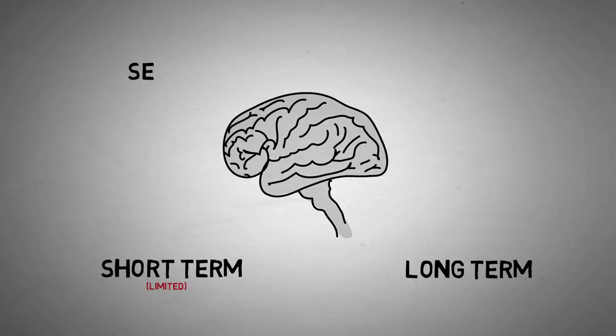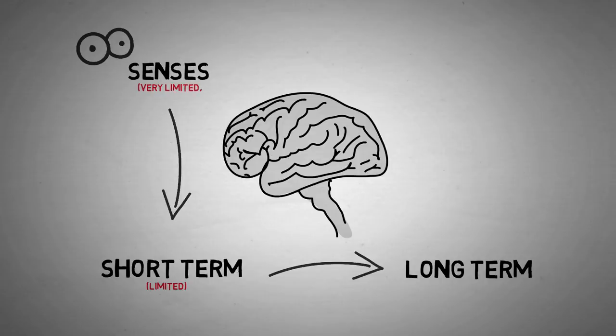So first off, short-term memory is very important, because it holds information between sensory memory and long-term memory. For example, we might see a phone number on a piece of paper. It stays inside our iconic memory, or visual memory, which is a form of sensory memory, for less than four seconds, until it gets transferred to our short-term memory if we pay attention to it.